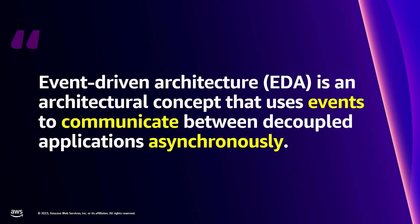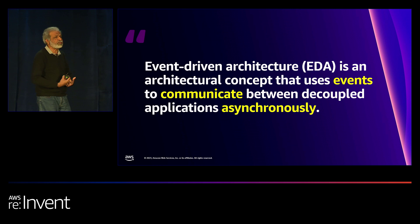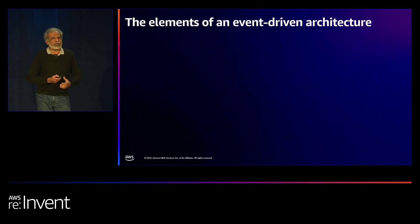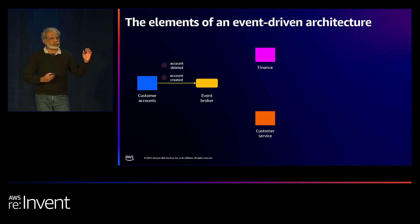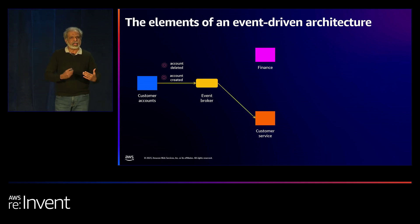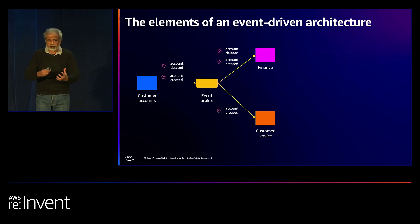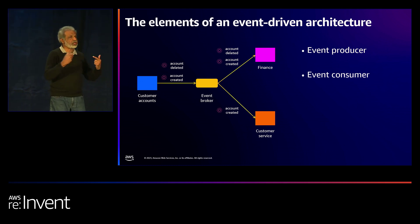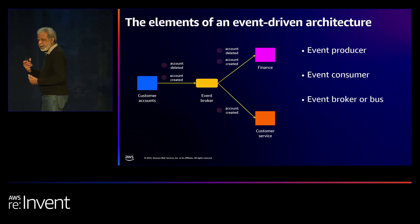That is one of the fundamentals of asynchronous event-driven architecture. So what is EDA? It's an architectural concept where events communicate via asynchronous invocation and implementation patterns. In a simple event-driven architecture, there are four main elements: a producer or publisher, a consumer or target service, a broker or bus, and of course, the events themselves.